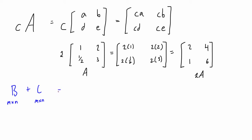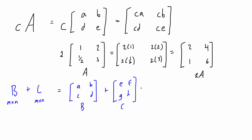Let's do an example with 2 by 2 matrices. Matrix B has elements A, B, C, D and we add it to another 2 by 2 matrix with elements E, F, G, H. When we compute this, it's element-wise: we take the first element in the first row and first column and add those together from each matrix. The solution matrix will be: A+E, B+F, C+G, and D+H.